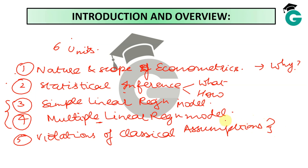There are three violations in this unit: there is multicollinearity, there is heteroscedasticity, and there's serial correlation. All three may sound completely foreign to you right now, and that's okay — you're not expected to know this at all at this point. By the end of the course, you're expected to know this.